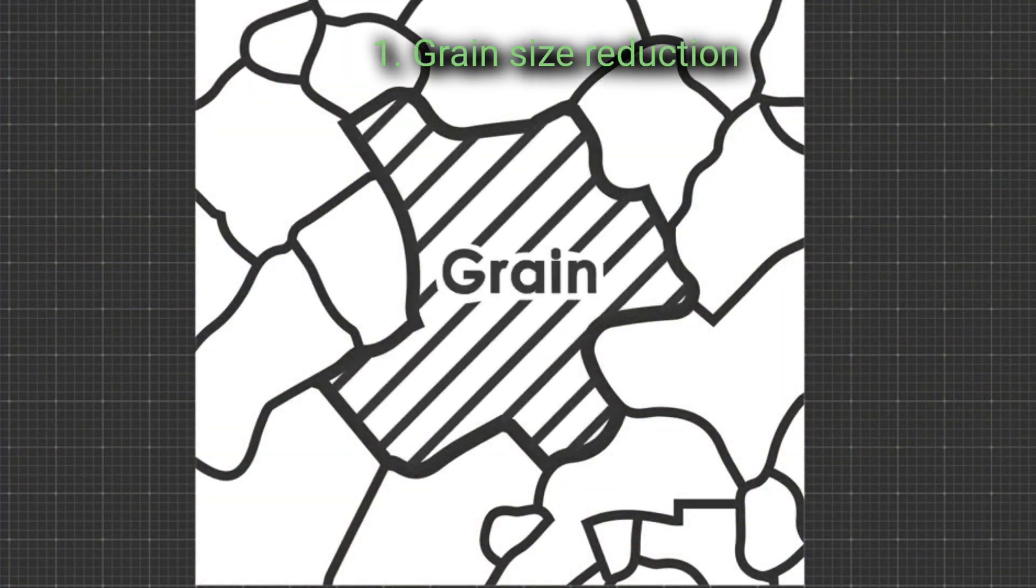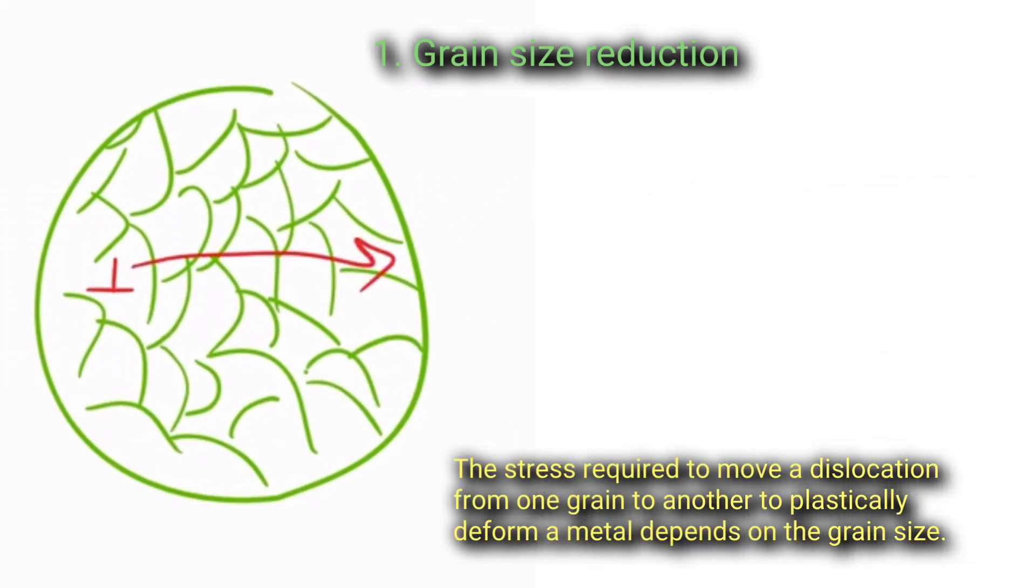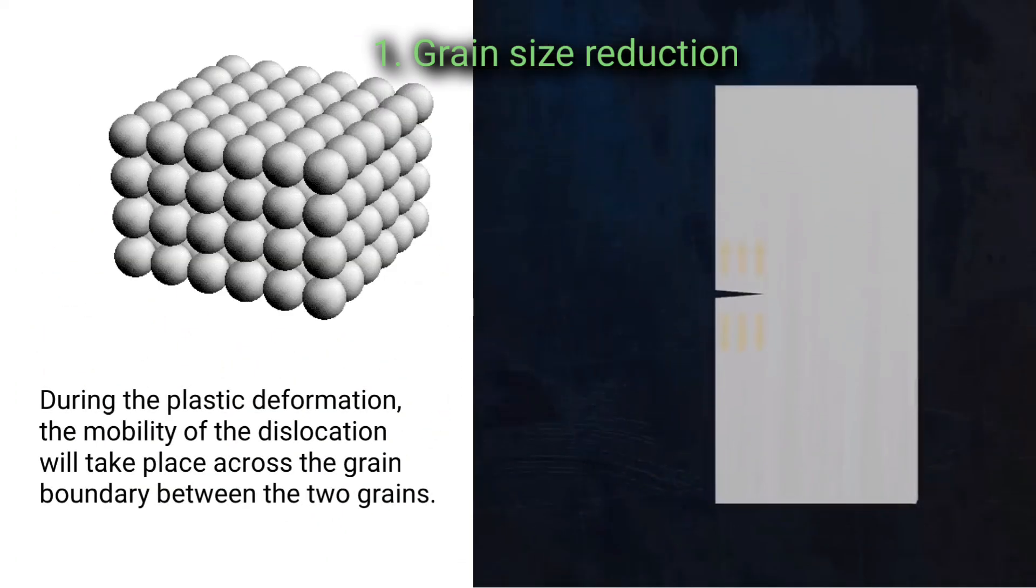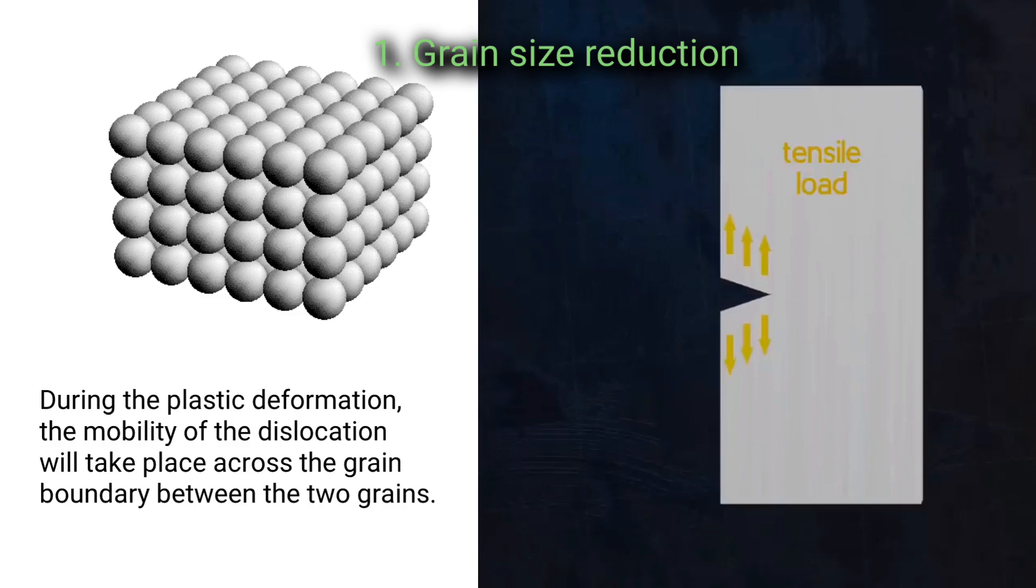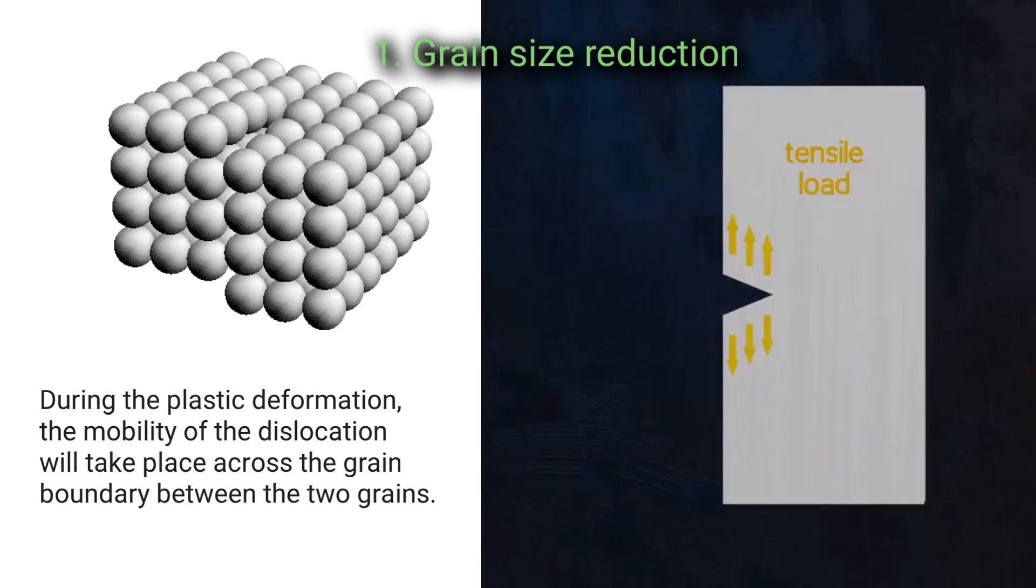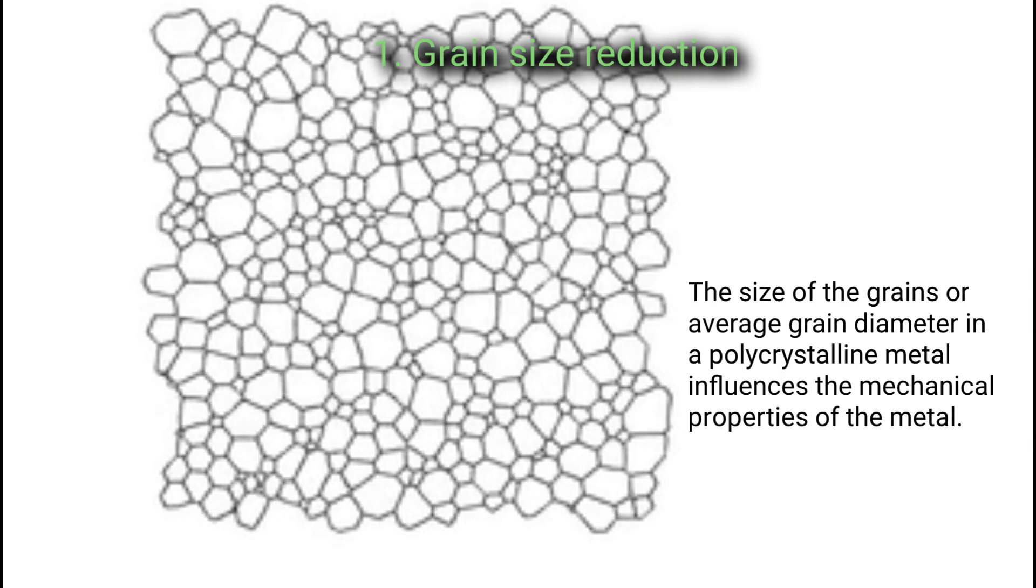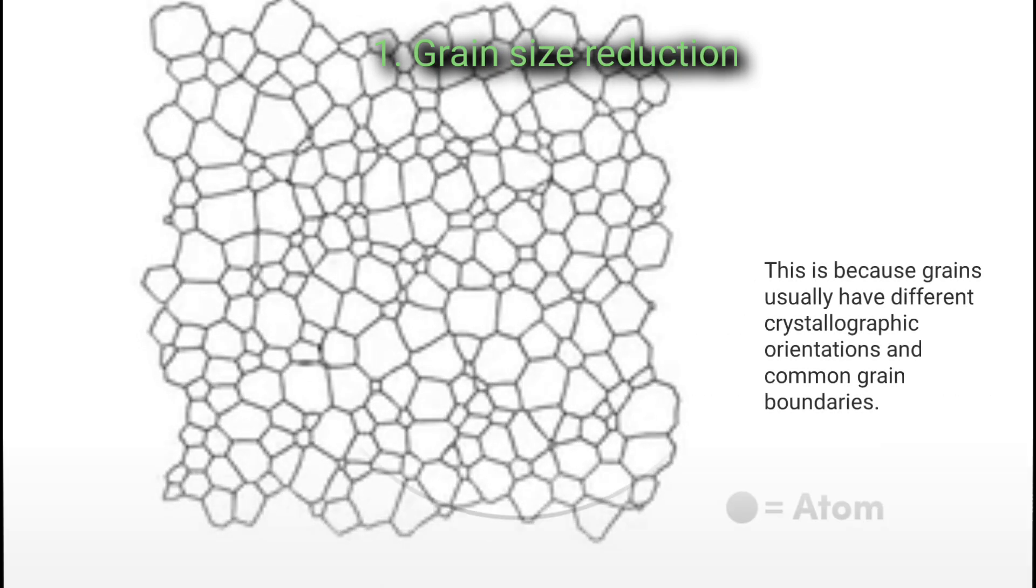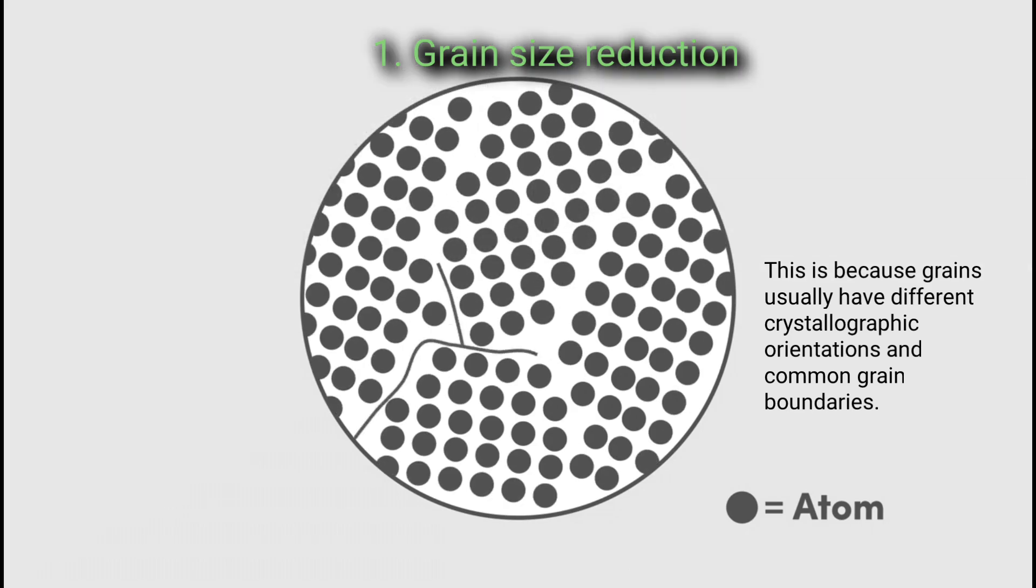Grain size reduction: The stress required to move a dislocation from one grain to another to plastically deform a metal depends on the grain size. During the plastic deformation, the mobility of the dislocation will take place across the grain boundary between the two grains. The size of the grains or average grain diameter in a polycrystalline metal influences the mechanical properties of a metal. This is because grains usually have different crystallographic orientations and common grain boundaries.